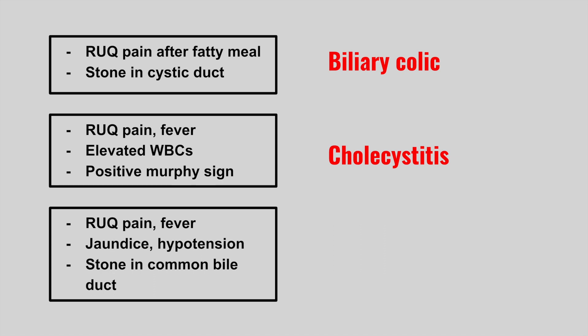The next patient has right upper quadrant pain, fever, jaundice, hypotension, and a stone in the common bile duct. This is cholangitis — the stone has entered the common bile duct. Along with right upper quadrant pain and fever, look out for jaundice, hypotension, and altered mental status.